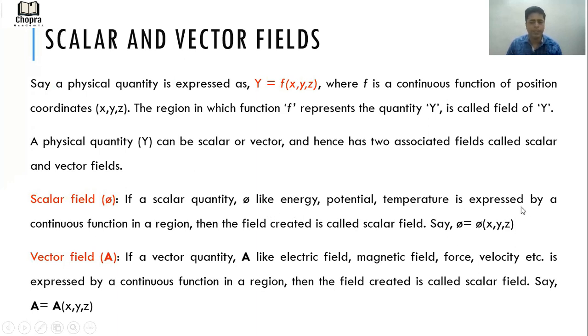What is a vector field? If a vector quantity A like electric field, magnetic field, force, velocity, etc. is expressed by a continuous function in a region, then the field created is called a vector field. Say, A = A(x,y,z).